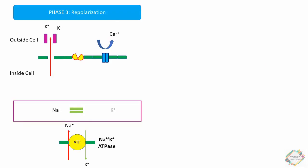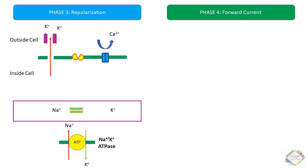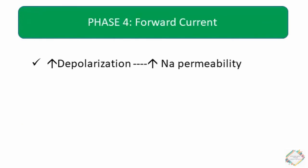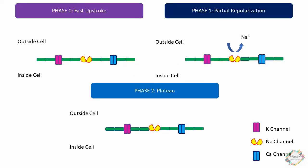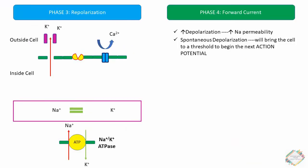During phase 4, forward current, increasing depolarization results from a gradual increase in sodium permeability. This spontaneous depolarization automatically brings the cells to the threshold of the next action potential, continuing sequentially: fast upstroke, partial repolarization, plateau, repolarization, then forward current.